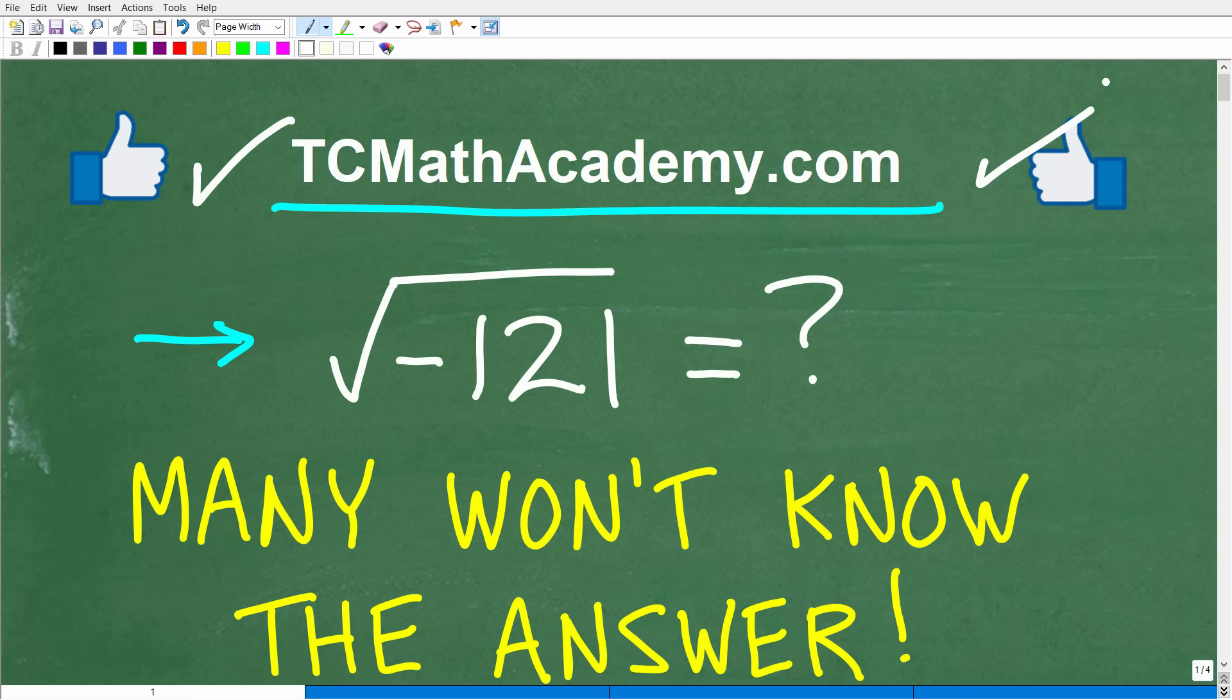Okay, so the square root of negative 121, the answer is not negative 11. So if you put down negative 11, that might make some sense, because you say, well, it's a negative number. Maybe it's negative 11 because the square root of 121 is 11. But this is not right.